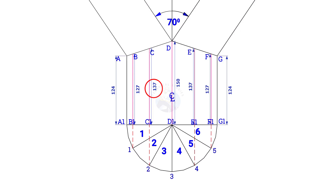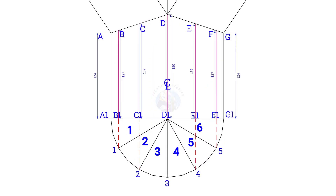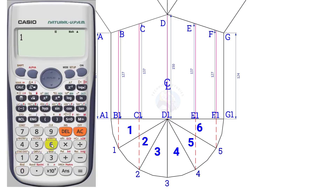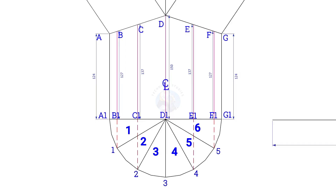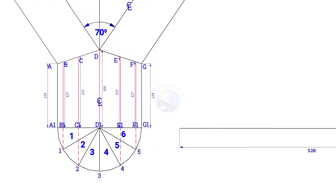Now calculate the circumference of the pipe. Multiply the pipe diameter by 3.14 or pi. Since the diameter of the pipe is 168, multiply it with 3.14. The circumference is nearly 528 millimeters. Draw a 528 millimeters long line.